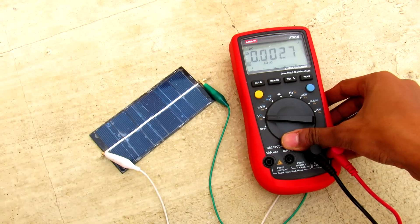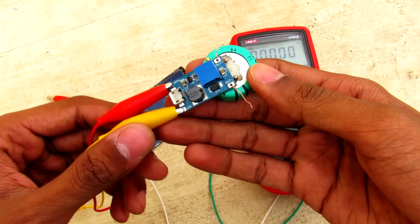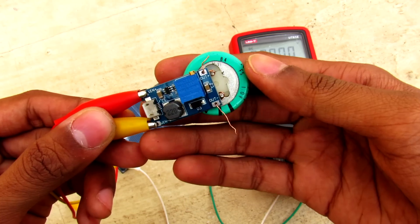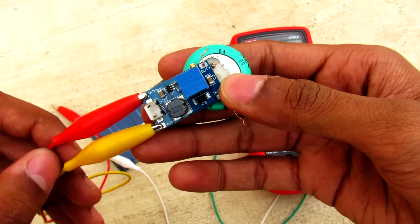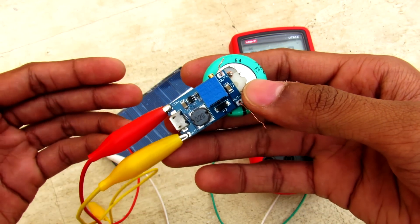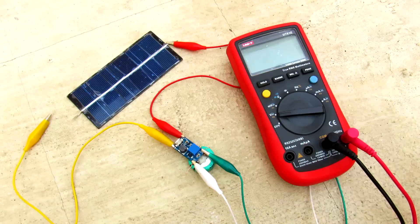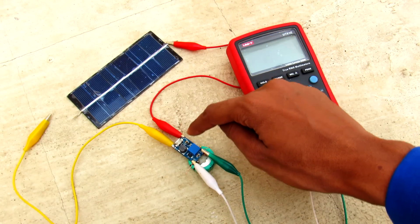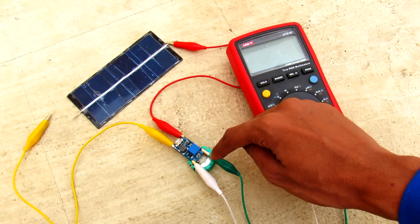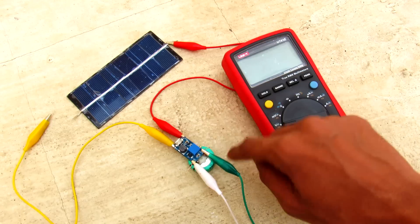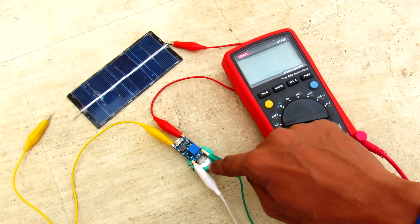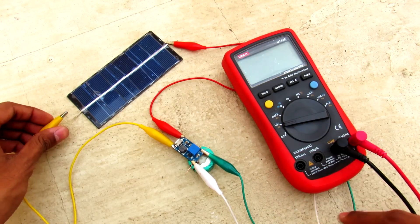But I have used this step up converter so that it can also run in indoor conditions. So right now I have connected this DC to DC converter and the super capacitor to my multimeter, and this super capacitor is discharged.